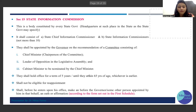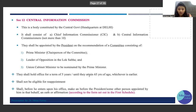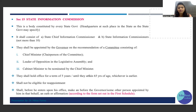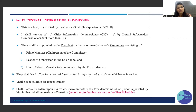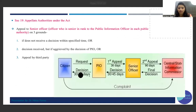The State Information Commission is established by the State Government, with headquarters in the respective state. It consists of one State Chief Information Commissioner and State Information Commissioners — not more than 10. The appointment is made by the Governor on the recommendation of a committee consisting of: the Chief Minister (Chairperson), the Leader of Opposition in the Legislative Assembly, and a Cabinet Minister nominated by the CM. Tenure is three years at present, with no reappointment. Understanding one body means you automatically understand the other as they follow the same pattern.